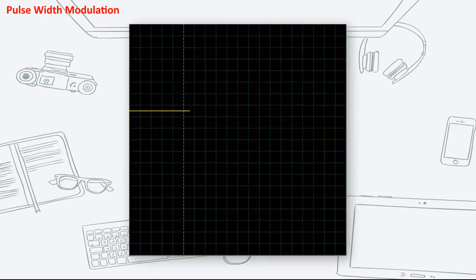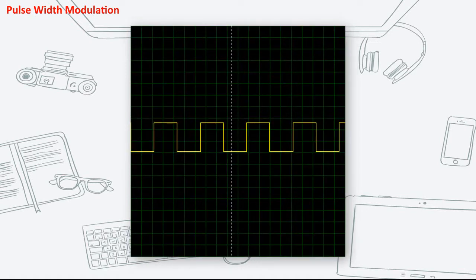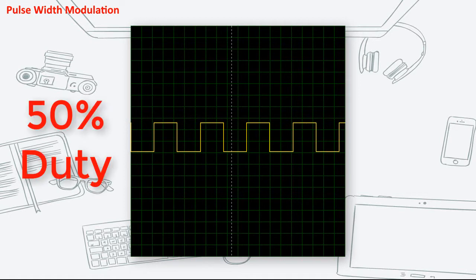On an oscilloscope, a 5V looks like this, and a 0V looks like this. When PWM comes into the picture, the 5V and 0V are combined having a signal like this. This signal means that it is on 50% of the time and off for the other 50%. We call this a PWM with a 50% duty cycle. For an electronic component, it means that it is supplied only 50% of the time.